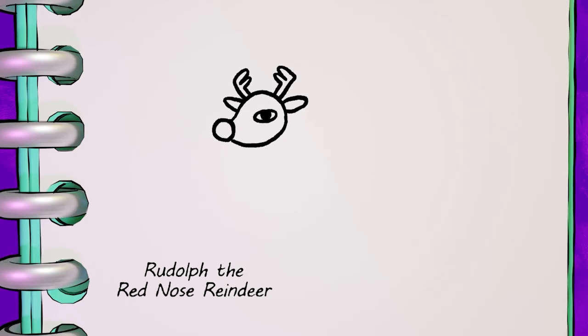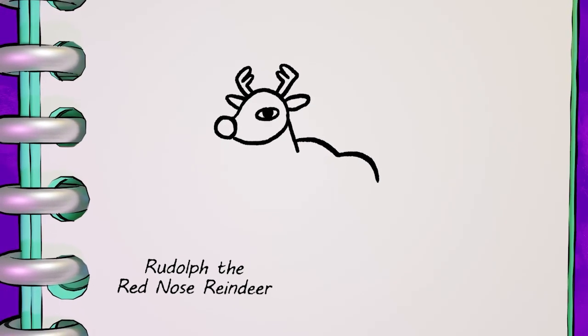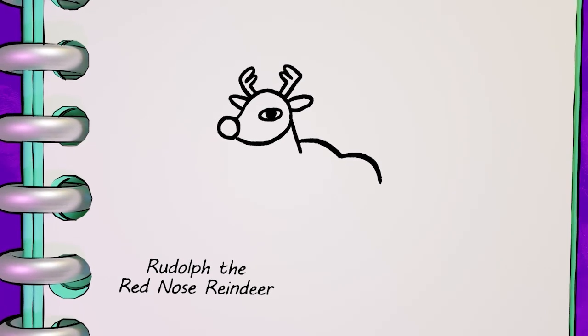Next, draw a line a little bit down from his head, and then two humps for his back. Then another line to complete the neck.